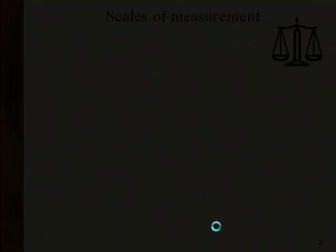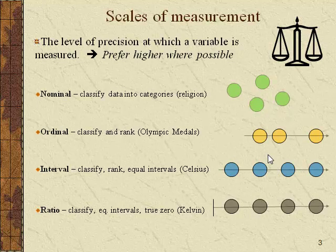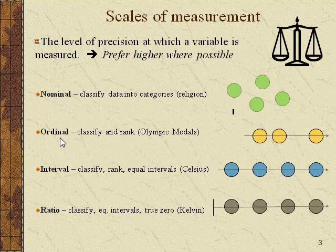That's the basic distinction — qualitative versus quantitative. The next concept is scales of measurement. The idea is being able to specify the level of precision at which you're measuring a given variable. Think about people's different religious orientations — Baptist, Catholic, Methodist — those different categories are distinct but you can't rank them. That's measuring at the nominal level, where nominal means just to name something.